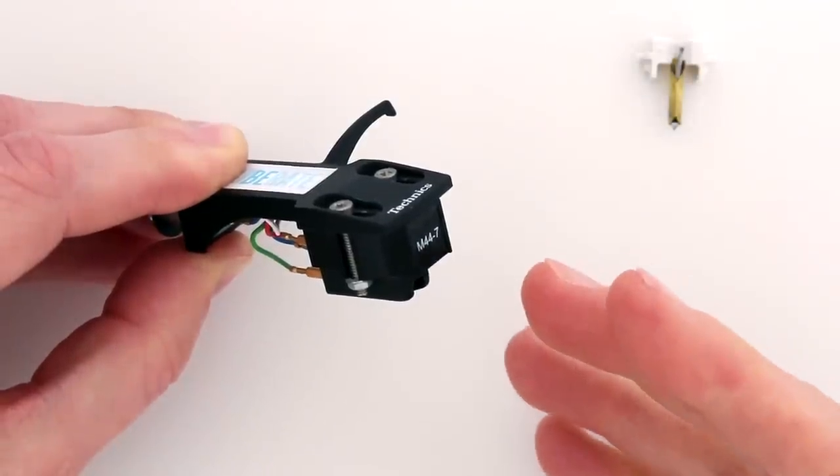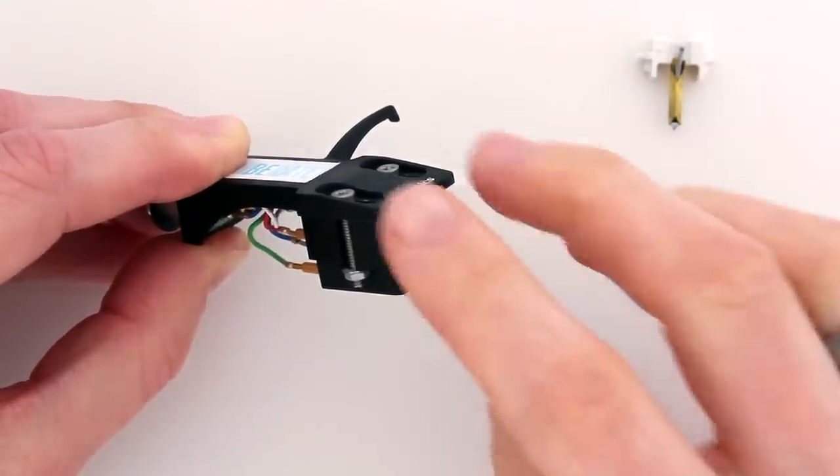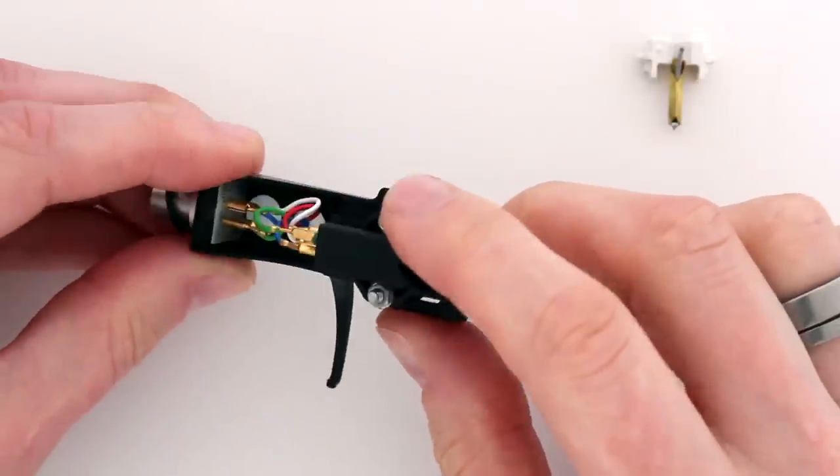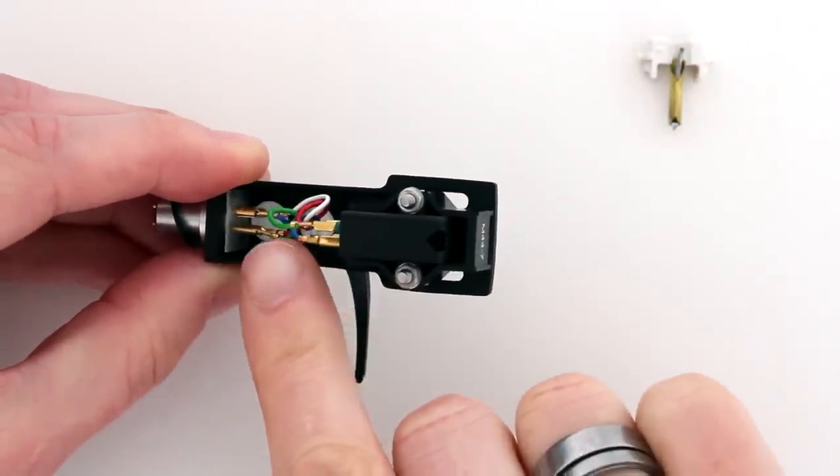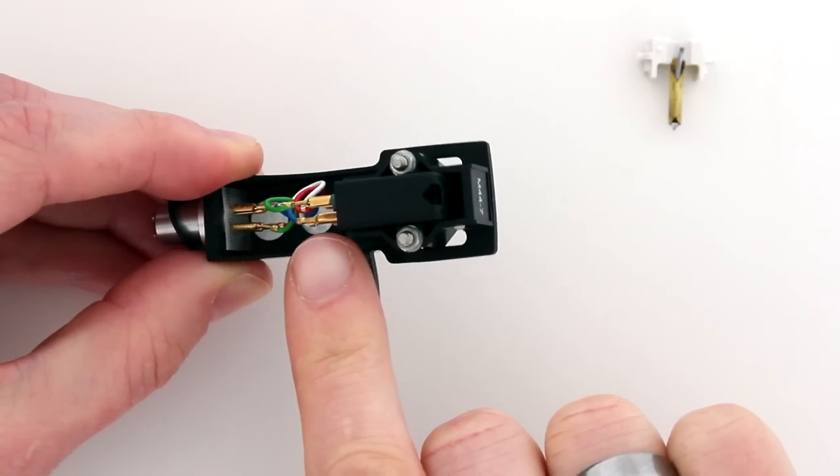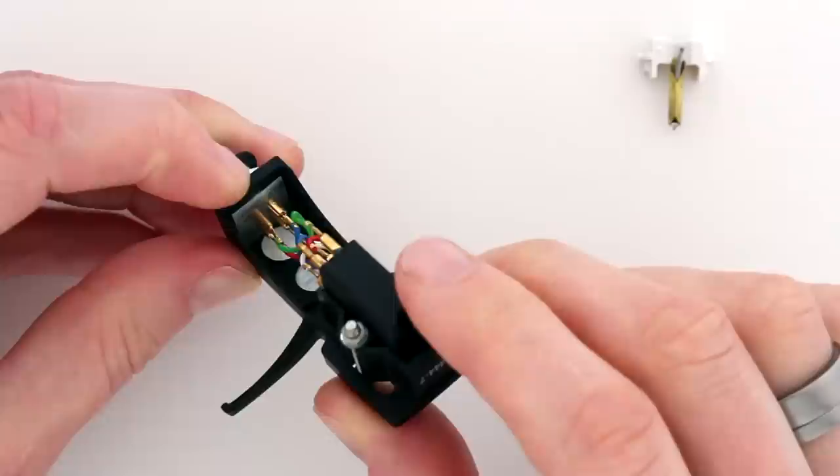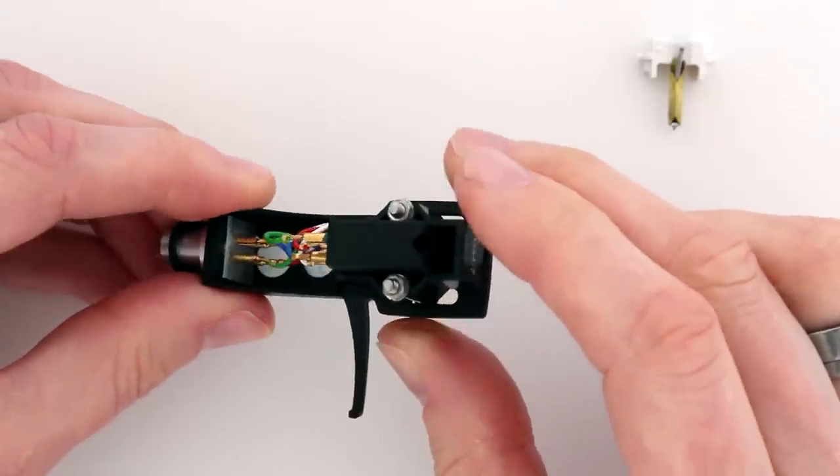So they come unassembled when you buy them, and to assemble them, you just connect the black cartridge to the head shell via these little coloured wires, and it's all colour coded inside on the cartridge and also on the head shell, so you know which bits to attach where.